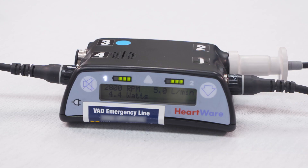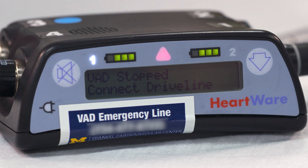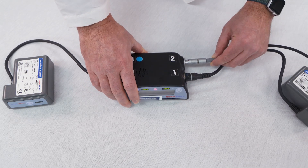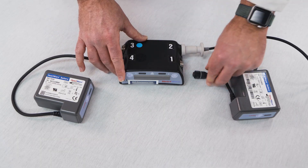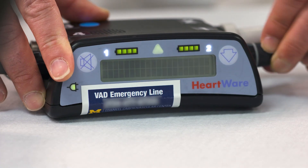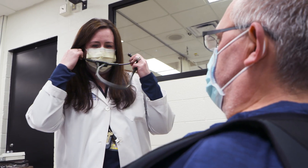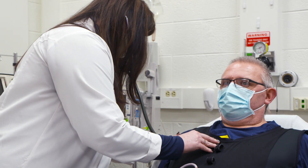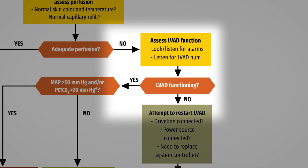For the HeartWare device, check to see if the device is on by checking the screen. If it is off, the screen and lights on the face of the controller will be blank, or it could display 'Connect Driveline.' Here is how to reconnect the driveline and the power supply. Reconnecting the driveline or power supply quickly will resuscitate the patient if the pump was off. You should next auscultate over the chest to confirm the hum of the VAD. If you auscultate, you will hear a sound something like this. This often masks the normal heart tones.